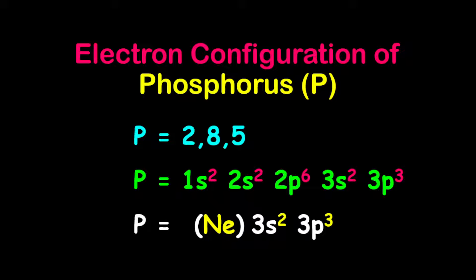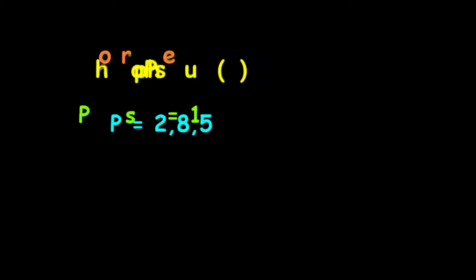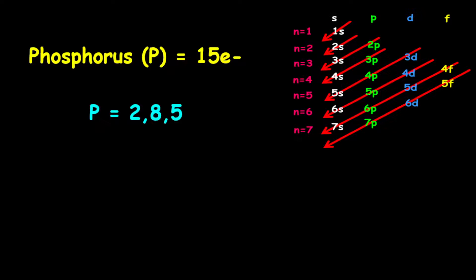The electron configuration of phosphorus. Phosphorus has 15 electrons. Therefore, 2 electrons will be on the first shell, 8 electrons on the second shell, and 5 electrons on the third shell. Therefore, the electron configuration is given as 2,8,5.